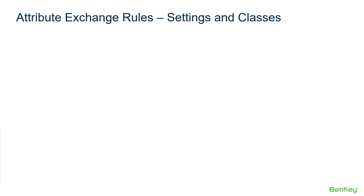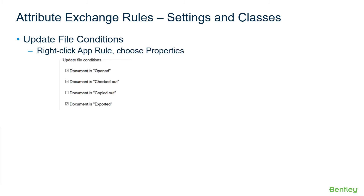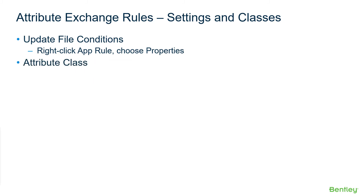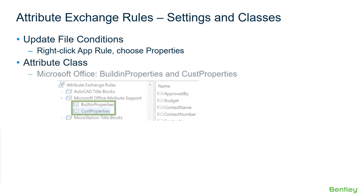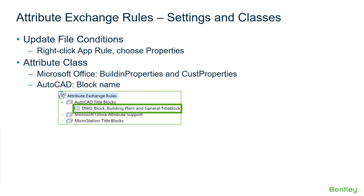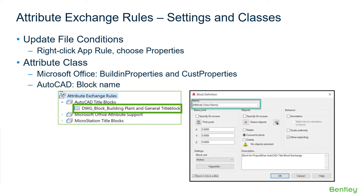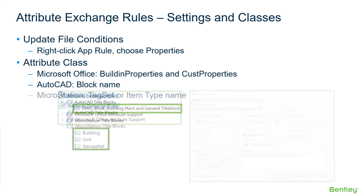Each Exchange Rule consists of three standard parts. The rule property allows the update file conditions to be chosen — whether the attribute is exchanged during a document open, checked out, copy out, or exported event. The second part is Exchange Rules' attribute classes. For Microsoft Office, the attribute class must be named built-in properties and custom properties. For AutoCAD, each attribute class created must be the same name as the attributed block within the drawing. For MicroStation, each attribute class created must be the same name of a tag set within the drawing.